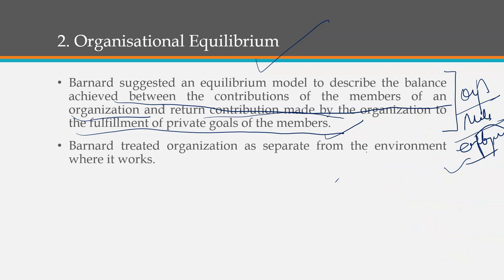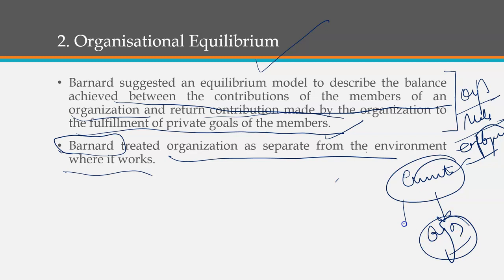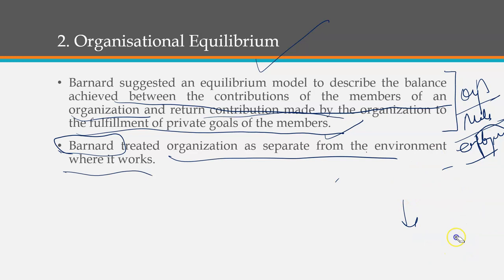Another important point in Bernard's theory was that organization is separate from environment. In the early days, most theorists believed that the environment does not affect the organization — the organization continues to run as it is, and the situation does not heavily influence the working of the organization. Today, of course, most organizations are definitely affected by a very dynamic environment.